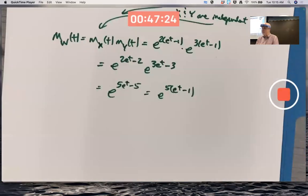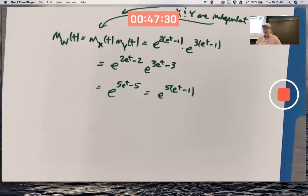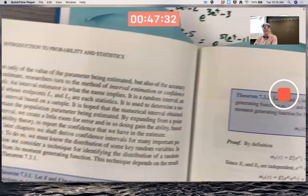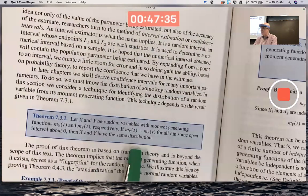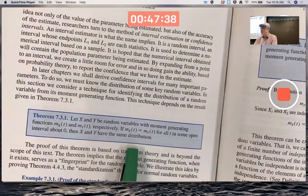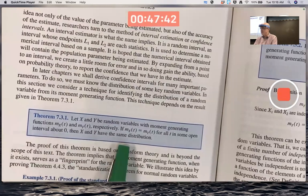And then you say, hey, that is the moment generating function for a Poisson random variable with mean of 5. Therefore, about the fingerprint theorem, previous page, if two random variables have the same moment generating function for all T in some open interval around the origin, then they have the same distribution.